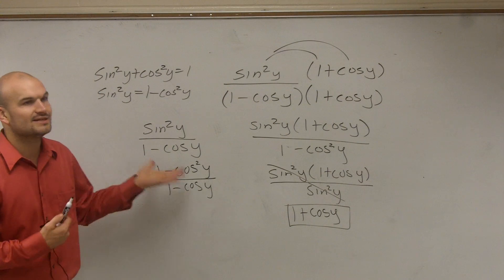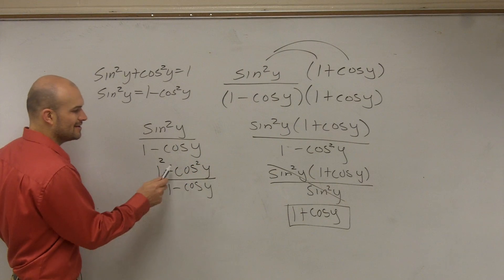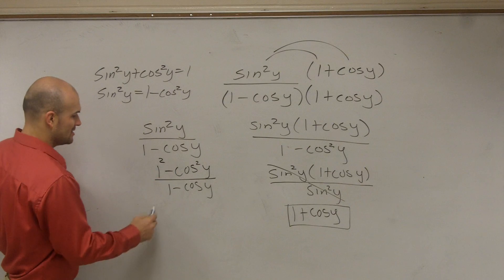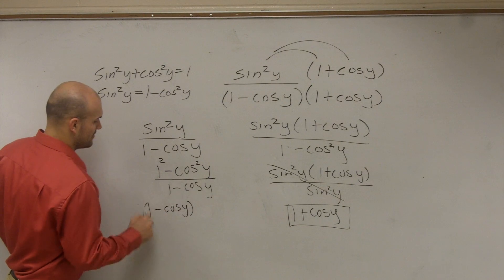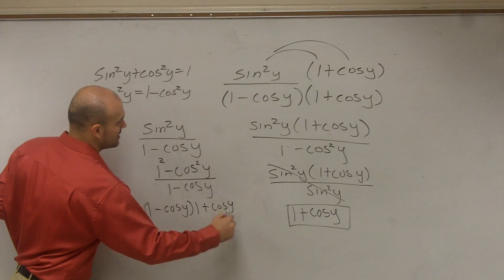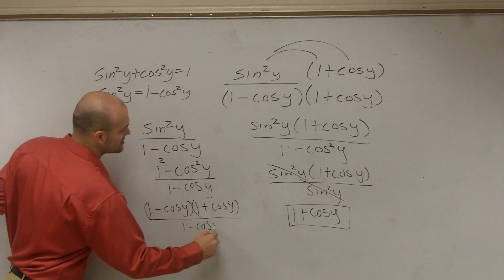Now, you guys need to understand that this is a difference of two squares. This is 1 squared minus cosine squared. So, therefore, I can rewrite it as 1 minus cosine of y times 1 plus cosine of y all over 1 minus cosine of y.